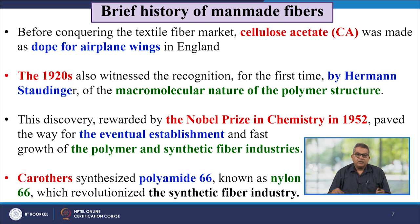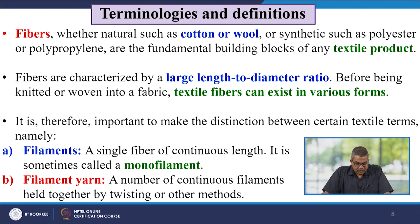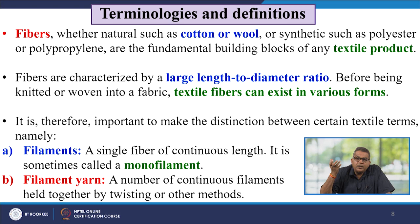Carothers synthesized polyamide 66, known as nylon 66, which revolutionized the synthetic fibre industry. Now let us talk about the terminologies and definitions. Fibres, whether natural such as cotton or wool, or synthetic such as polyester or polypropylene, are the fundamental building blocks of any textile product. Fibres are characterized by a large length-to-diameter ratio before being knitted or woven into fabric.